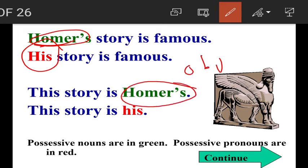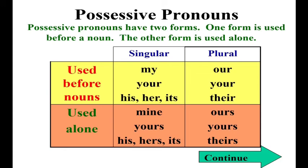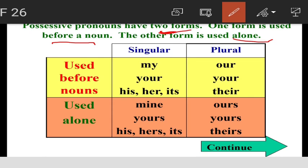Possessive nouns are shown in green; possessive pronouns in red. Homer's is a possessive noun; his is a possessive pronoun. Possessive pronouns have two forms: one form is used before a noun, and the other form is used alone.